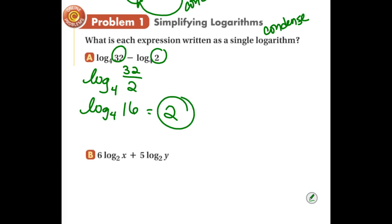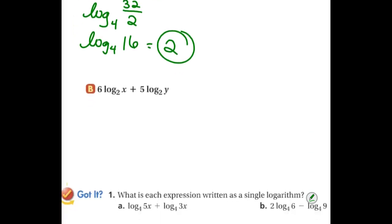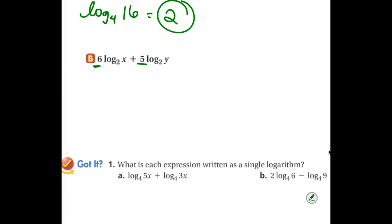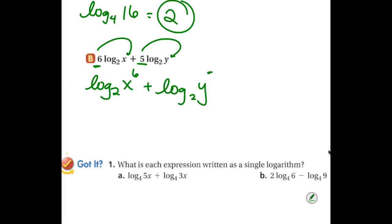Sometimes you're going to get lucky and be able to condense all the way down to just a number; most of the time you won't — you'll still have that log term. For the next example, I see numbers in front. What moves out front? The powers. So we're going to put them back as powers. This 6 is going to go back as the power of x, and this 5 is going to go back as the power of y. This becomes log base 2 of x to the 6th plus log base 2 of y to the 5th. Now I can deal with the addition sign — addition turns back into multiplication. So this condenses down to a single log base 2 of x to the 6th times y to the 5th.